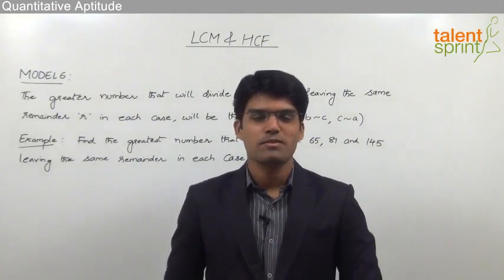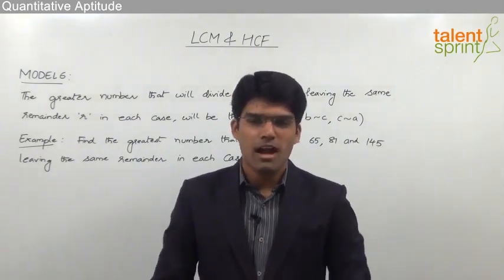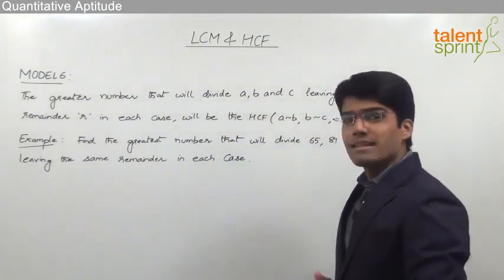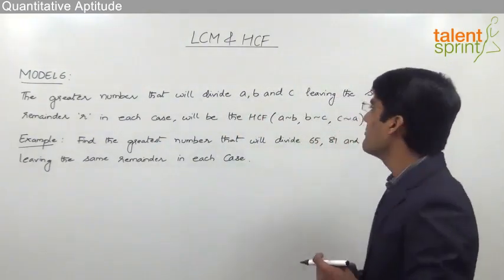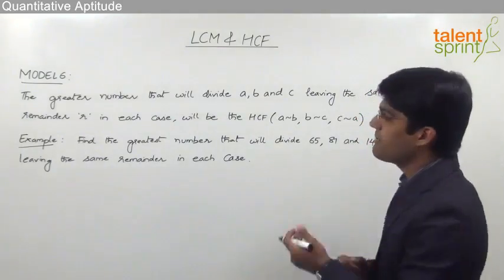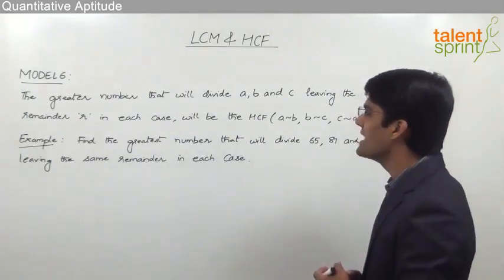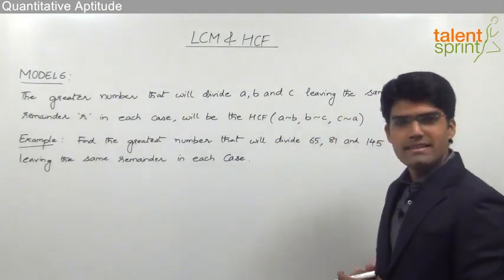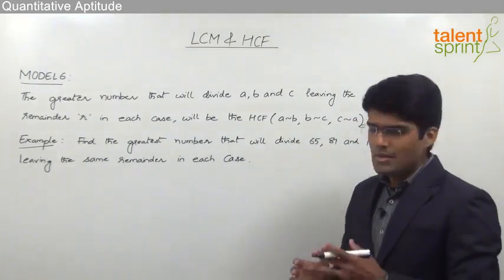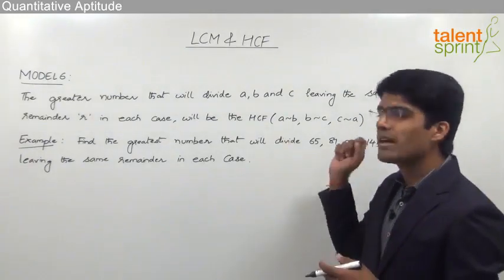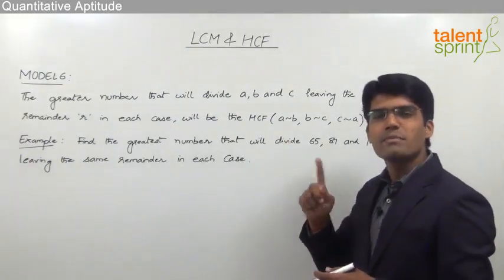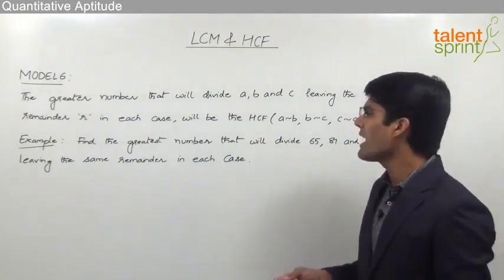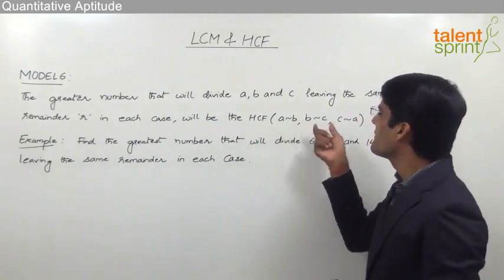Let us now take the sixth model from this topic which is based on the concept of highest common factor. The point here is the greatest number that will divide a, b, and c leaving the same remainder r in each case will be the HCF of a difference b, b difference c, and c difference a. Whenever the greatest number that divides three numbers a, b, and c leaving the same remainder in each of the cases is required, the answer is the highest common factor of the three differences that we get out of these three numbers.